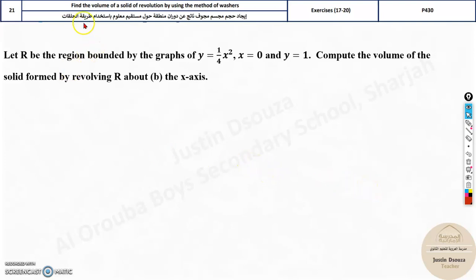In the 21st topic, where we need to find volume by the method of washers, it is hard to find the inner and the outer radius. Now, for example, over here,